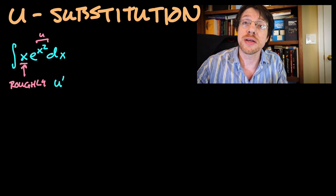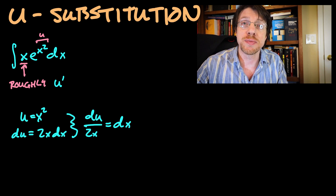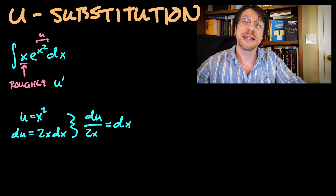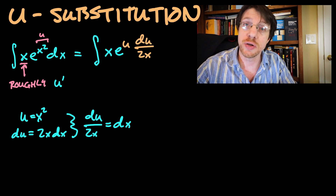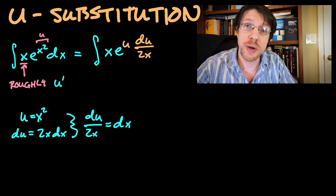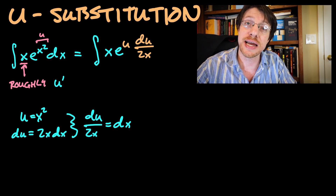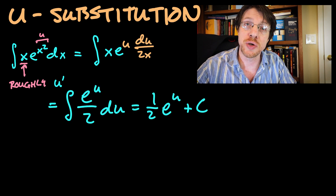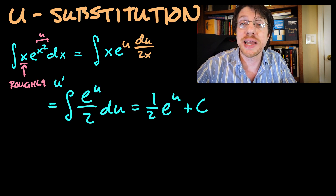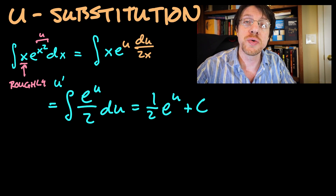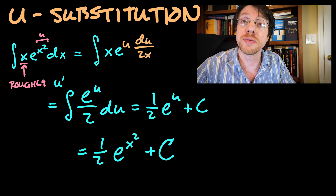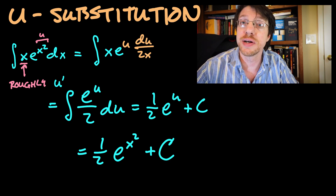So we set u equal to x squared, take the derivative of both sides: du is equal to 2x dx, then divide by 2x so that du over 2x equals dx. We replace x squared with u and dx with du over 2x. The x's cancel and we're left with the integral only in terms of u — that means you were successful. Since this is just the integral of e to the u divided by 2, the result is e to the u over 2 plus c. Replacing u with x squared gives e to the x squared divided by 2 plus c.